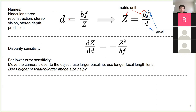This image is copied from a CMU graduate course by Samuel. There are a bunch of names for this process of evaluating disparity — we can call it binocular stereo reconstruction, stereo vision, or stereo depth prediction. All the same: we want to predict the disparity.